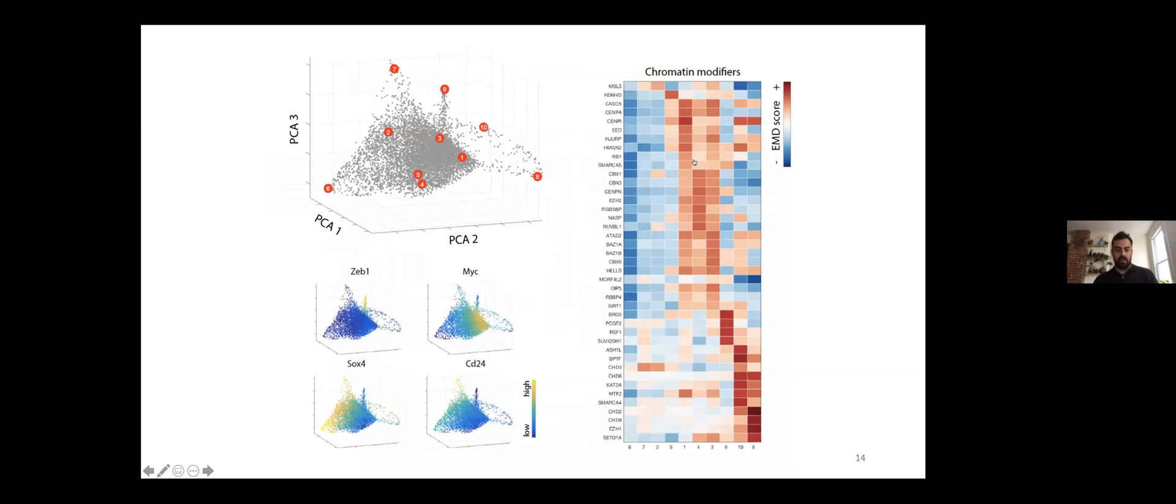We set out to quantify that state space and particularly use this technique called archetypal analysis to identify these extremal states in the data. We were able to identify several epithelial states, mesenchymal states, as well as apoptotic states where cells die. Perhaps most interestingly, and this was new, we were able to identify several intermediate states that showed stem-like signatures. This suggested as cells transition from the epithelial to the mesenchymal states they first undergo some kind of reprogramming step where they become more stem-like.